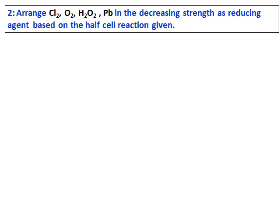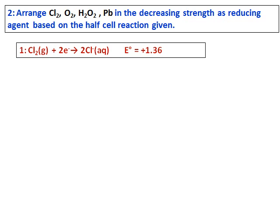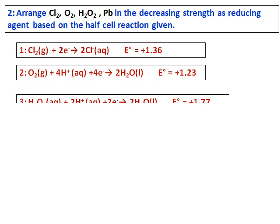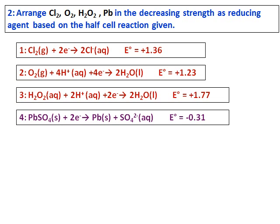Now arrange chlorine, oxygen, H₂O₂, and Pb in decreasing strength as reducing agents based on the half-cell reactions given. You can see that equations 1, 2, and 3 have a positive E⁰, and the fourth one has a negative E⁰. That means the fourth reaction involving lead will be more spontaneous in the reverse direction.